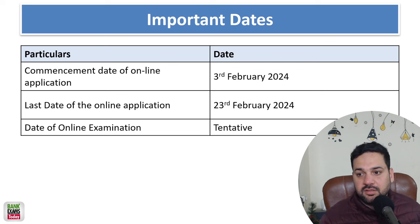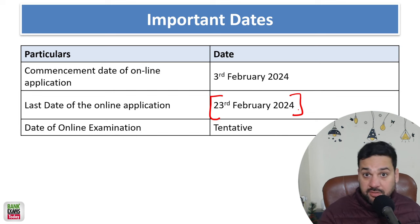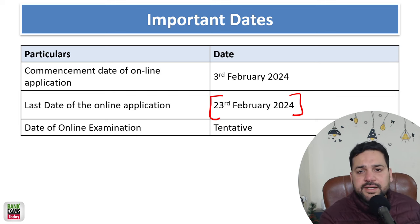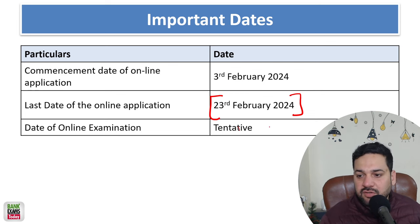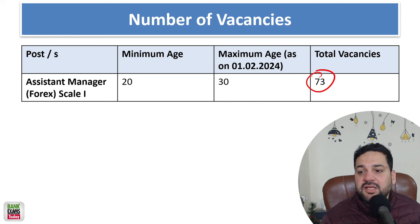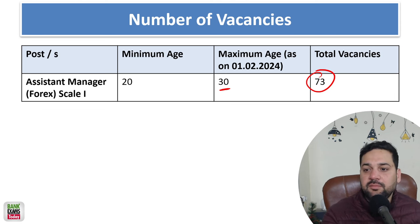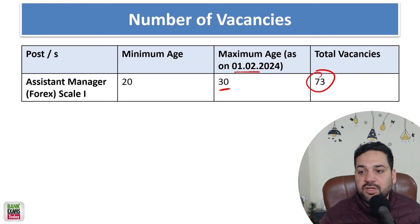Let's start the session. The last date to apply for the exam is 23rd of February 2024. Apply as early as possible, otherwise you may get a distant exam location. Tentative exam dates are not out as of now — most probably it should be in the month of April 2024. The total number of vacancies are 73, and if your age is up to 30 years, you are eligible. Minimum age 20, maximum 30 as on 1st of February 2024.